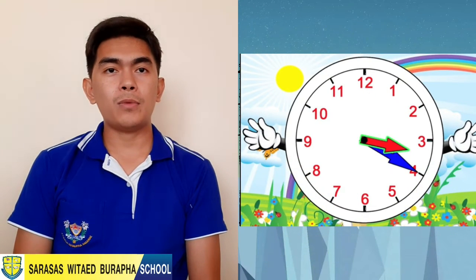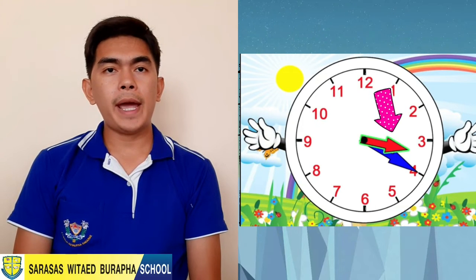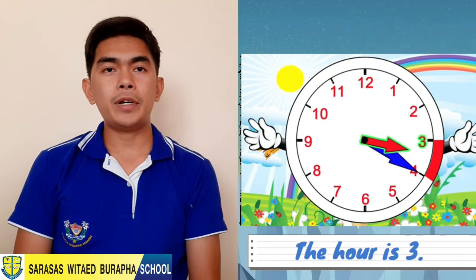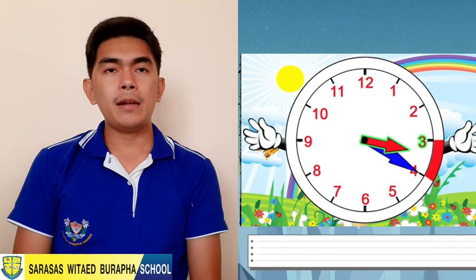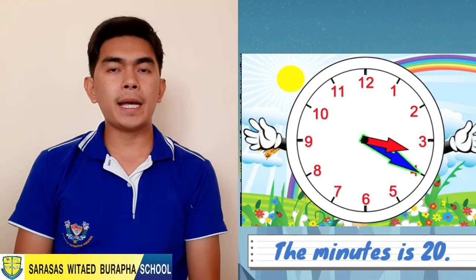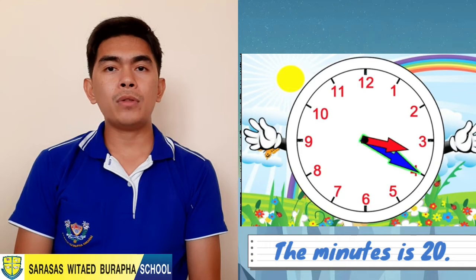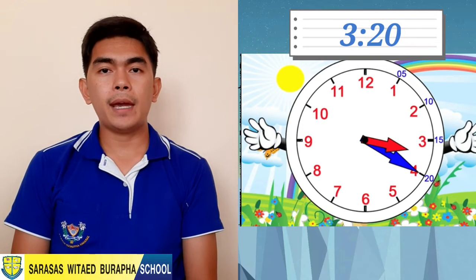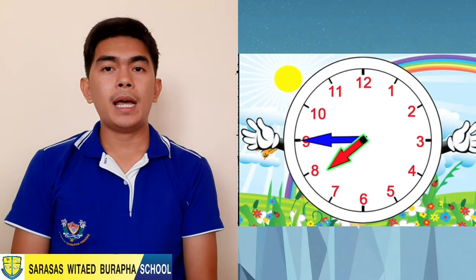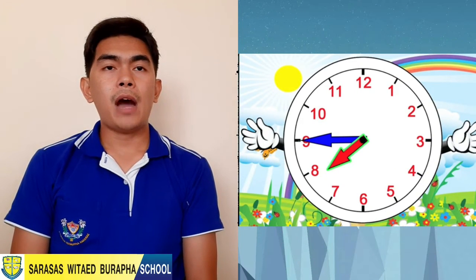Let's look at another one. First, look at the hour hand — we're still talking about hour three. Then look at the minute hand — 20 minutes have passed. You can count 5, 10, 15, 20. So it's 3:20, or 20 minutes past three.